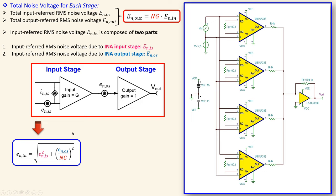By using averaging with four instrumentation amplifiers in parallel combined with an inverting summing amplifier, we achieve a noise reduction by a factor of two. We will look at further examples with more averaging amplifiers to see the effect on output noise performance. That concludes this example about noise reduction by averaging in instrumentation amplifier circuits. If you have any questions or comments please let me know, and see you next time.